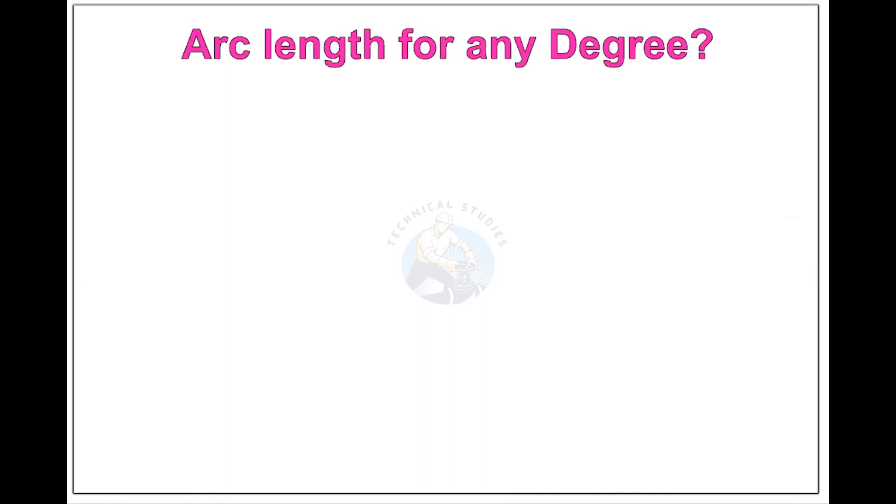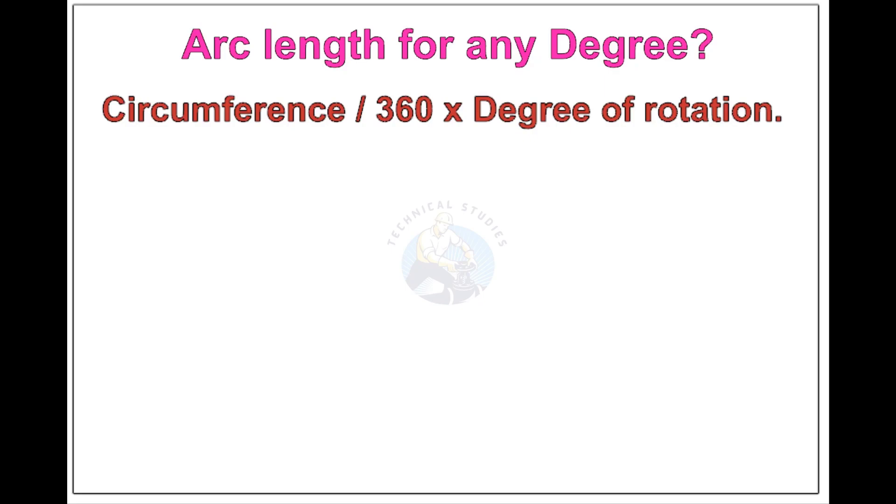Arc length of any degree: circumference of the pipe divided by 360 into the degree of rotation.